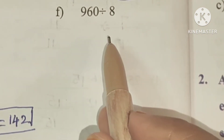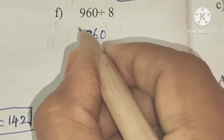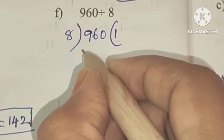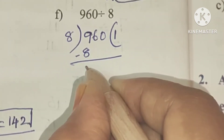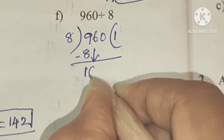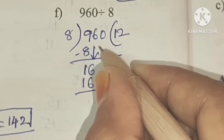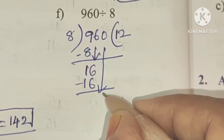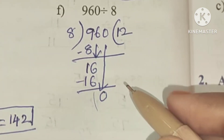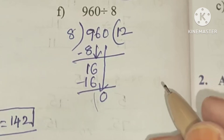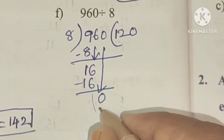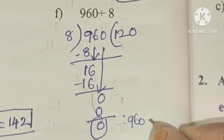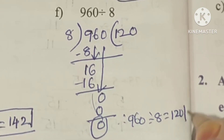F: 960 divided by 8. First number 9: 8 ones are 8, after subtraction 1 remains. Next number 6 comes down making 16: 8 twos are 16, after subtraction same number gives 0. Next number 0 comes down: zero times, 8 zeros are 0, remainder 0. So 960 divided by 8 equals 120.